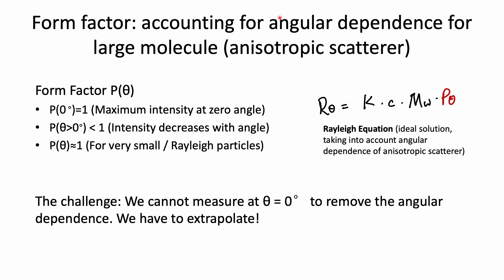Mathematically, you can account for this angular dependence using a function called the form factor P(θ). You can revise the Rayleigh equation to incorporate this form factor. P(θ) equals 1 when the angle is 0; when the angle is larger than 0, P(θ) is smaller than 1. For a very small particle, P(θ) is approximately equal to 1, so Rayleigh scattering is also accounted for within this equation.